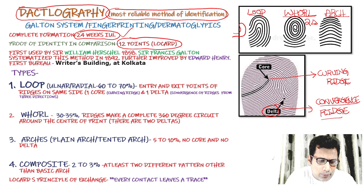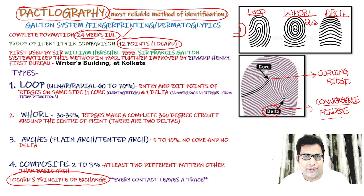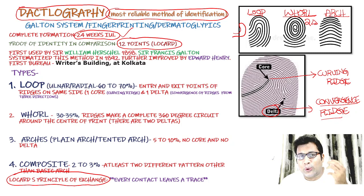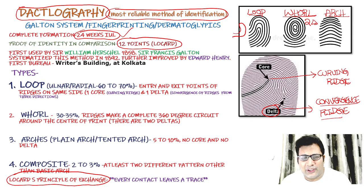One important MCQ: What is Locard's principle of exchange? In any crime, there must be some trace or some evidence. Every contact leaves a trace — that is known as Locard's principle of exchange. There must be some fingerprint or some other findings. Dactylography is very useful in criminal cases.